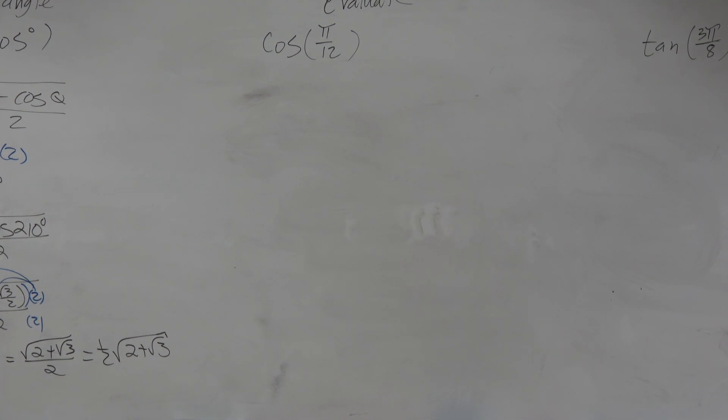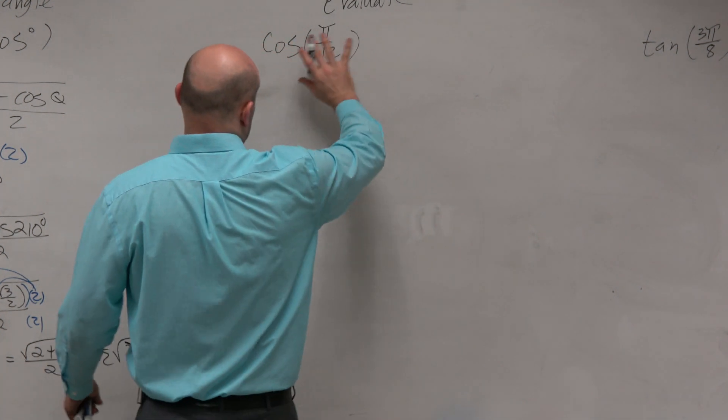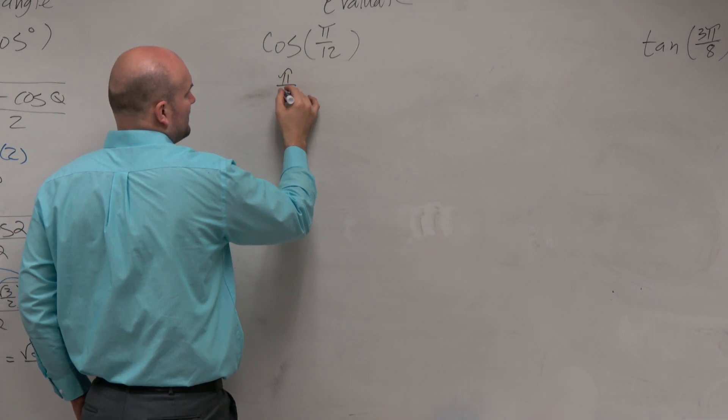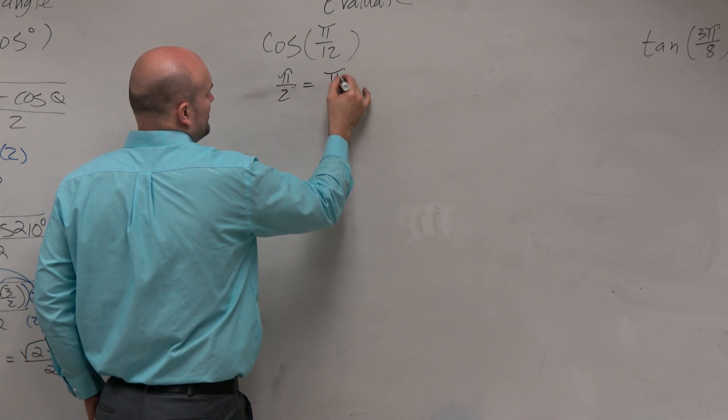All right, so for cosine, same thing. We're going to be using the half angle identities. Typically, the first thing I want to do is figure out if the half angle is π over 12, what is the full angle?